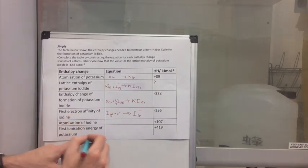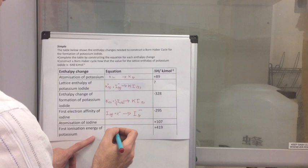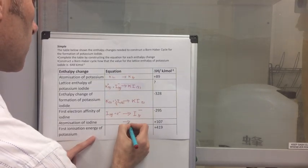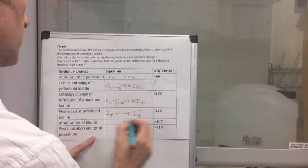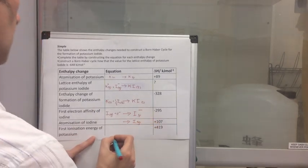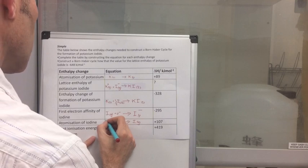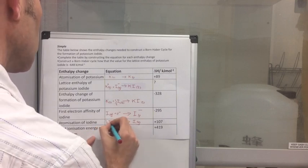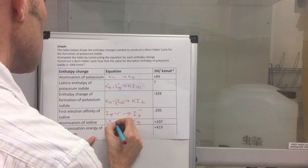The atomization of iodine. We've already had the atomization of potassium. So that's the formation of one mole of gaseous atoms. So we want I gas from the element. So that's from half a mole of I2 solid.